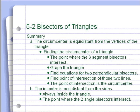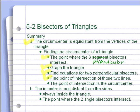That concludes this lesson. Summary: the circumcenter is equidistant from the vertices of the triangle. To find it, graph the triangle, find equations for two perpendicular bisectors, and find their point of intersection. The incenter is equidistant from the sides and is always inside the triangle; the point where the two angle bisectors intersect is your incenter.